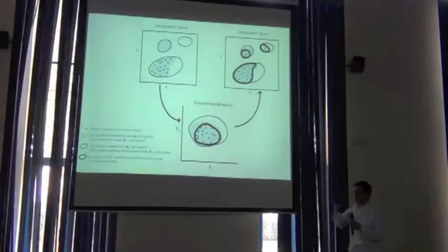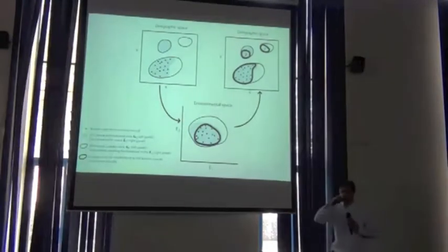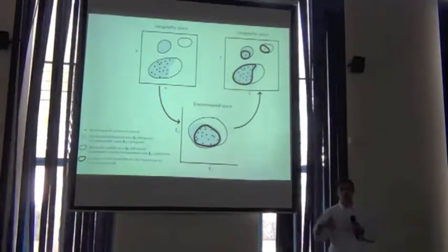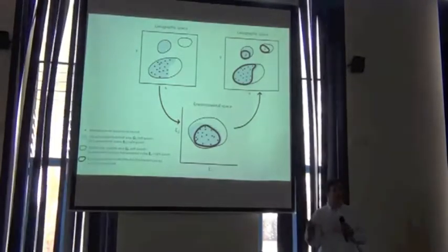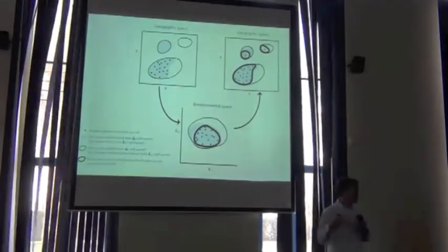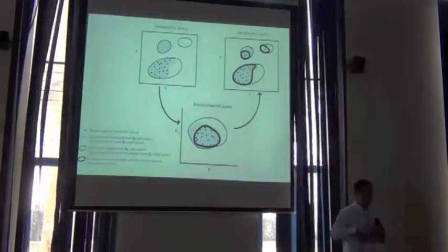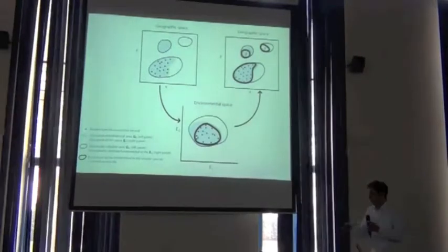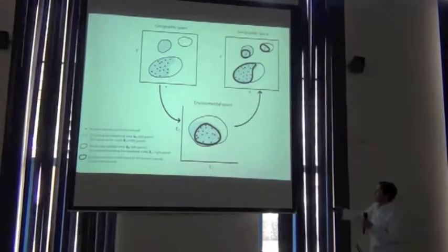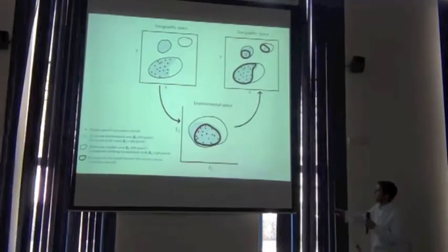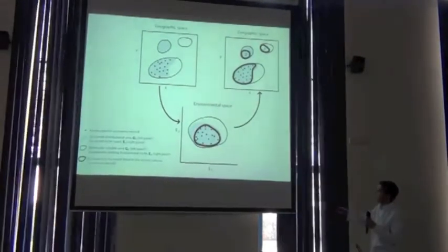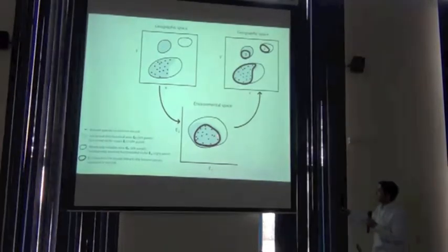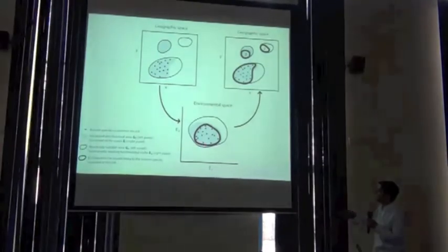When we talk about trying to use MaxEnt, or a genetic algorithm, or some statistical approach — a generalized linear model, a machine learning approach, a boosted regression tree — these are all approaches that are trying to do the best job of characterizing this part of niche space.